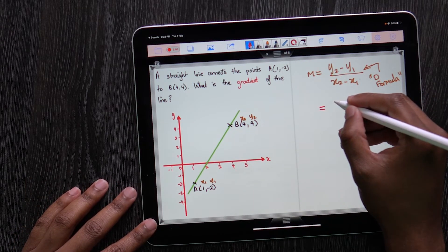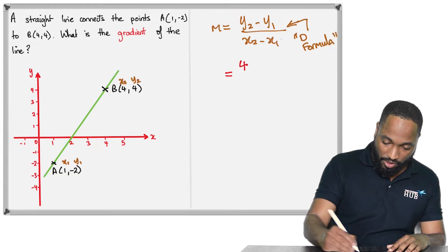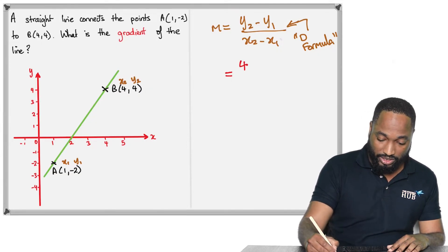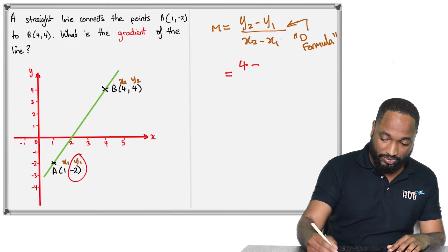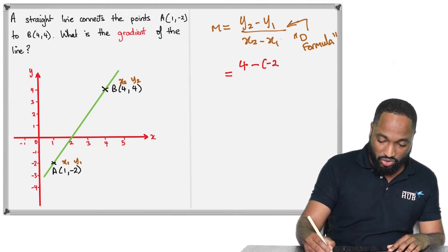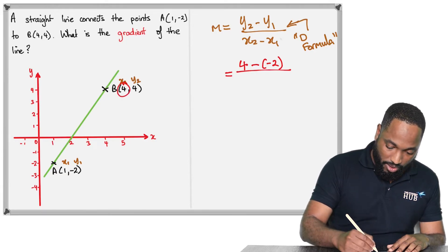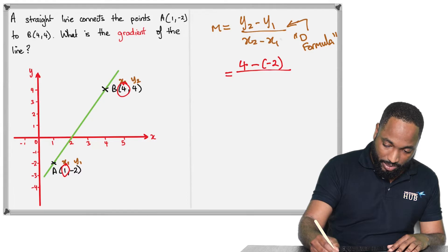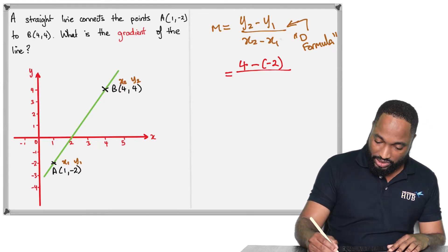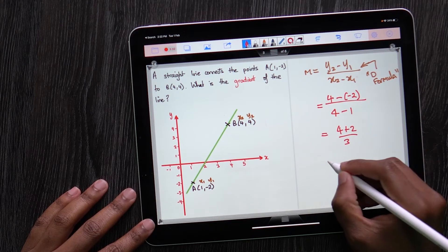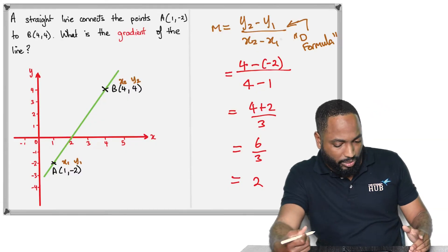M is going to be equal to y2 which is 4, minus y1 which is -2 — put it in brackets like this. Those double negatives can catch you out. And x2 would be 4 minus 1 — keep in mind this is just the x-coordinate of the other point. Then use your arithmetic skills to get down to the nitty gritty.